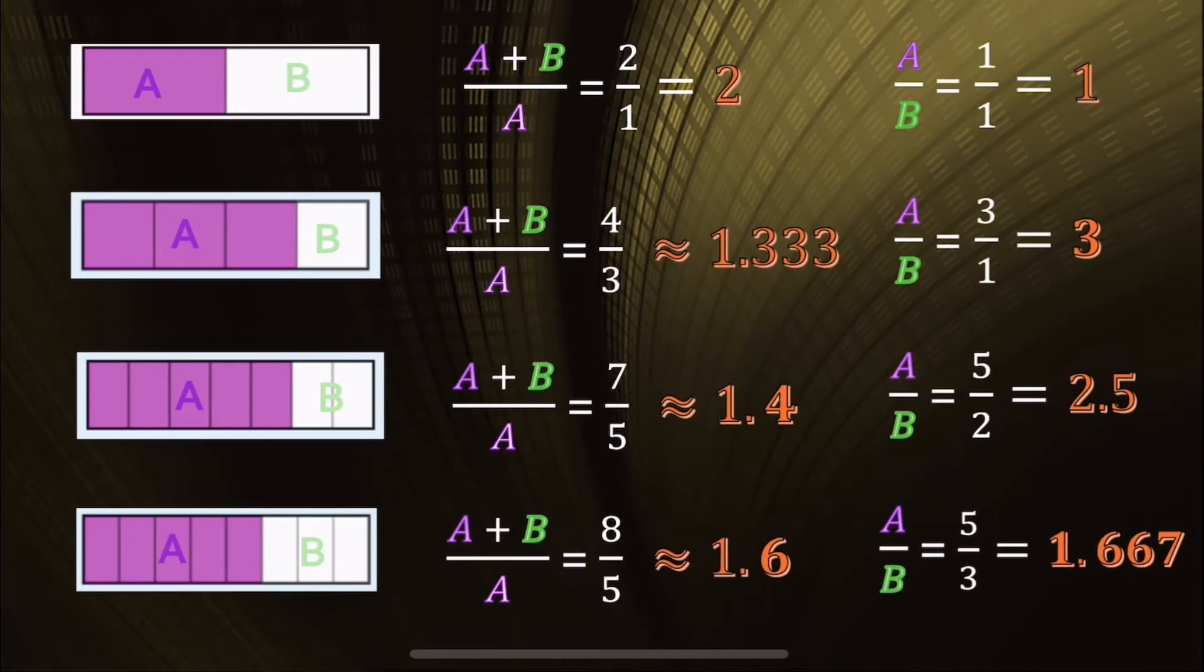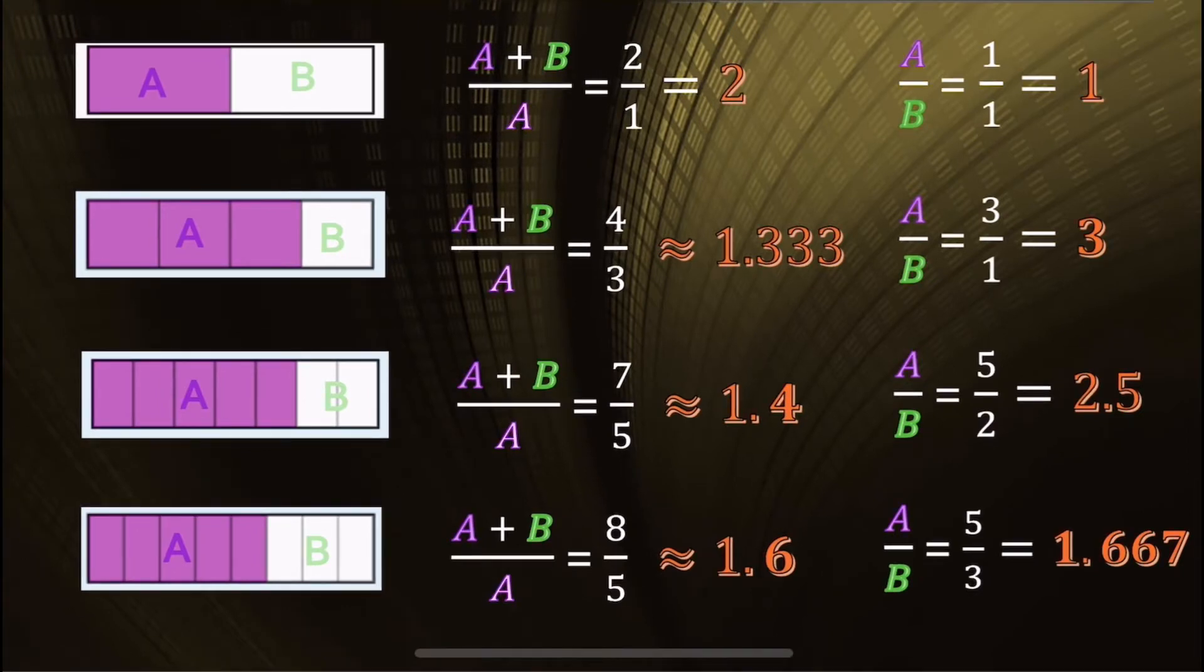So now the ratio of A plus B to A is 8 over 5, or 1.6, and the ratio of A to B is 5 over 3, or 1.667. So now we're within one decimal place. I could spend the whole day doing this guess and check method, and I'd get closer and closer, but I think we can all agree that that's just a waste of time.